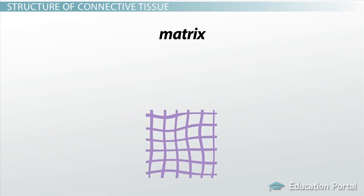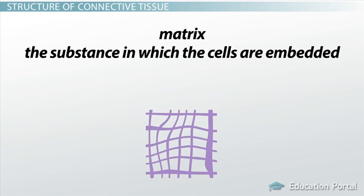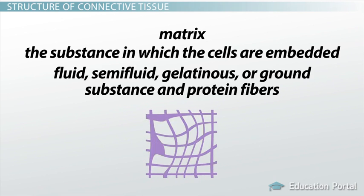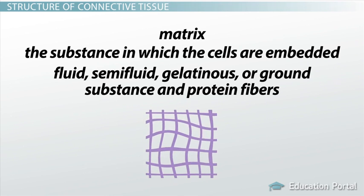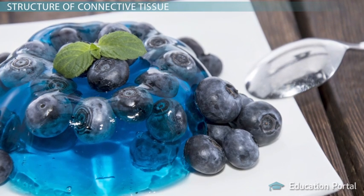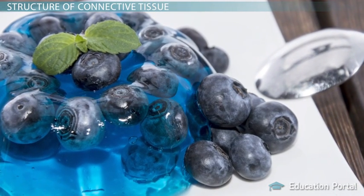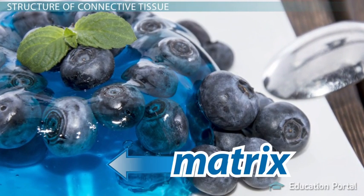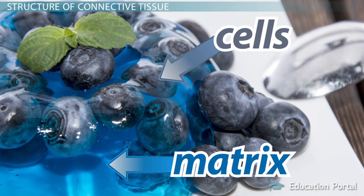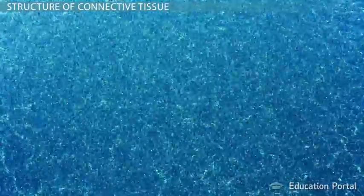The matrix can be thought of as the substance in which the cells are embedded. The matrix can be fluid, semi-fluid, gelatinous, or ground substance and protein fibers. One very basic way to visualize this is to imagine jello with chunks of fruit in it. Jello is the matrix, and the fruit represents cells. A ground substance is a supportive medium made of water and large molecules.